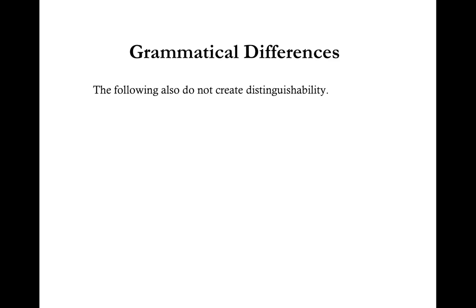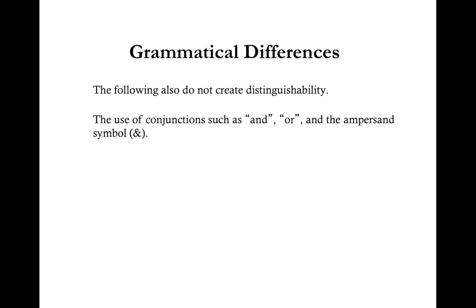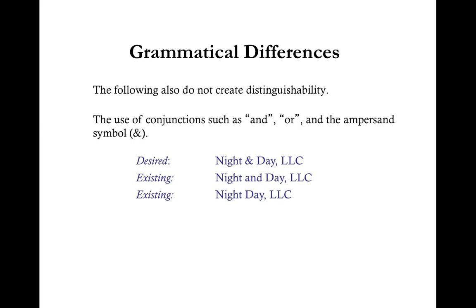The use of conjunctions such as AND, OR, and the ampersand symbol also do not create distinguishability. If your desired LLC name is Night & Day LLC and during your search you find Night and Day LLC or Night Day LLC, both examples are too similar and your desired name is not distinguishable and therefore not available. An alternative would be Moon and Sunshine LLC.